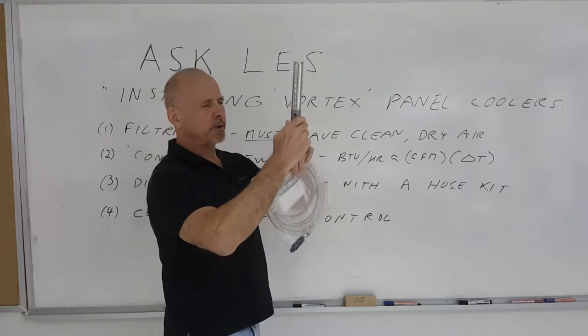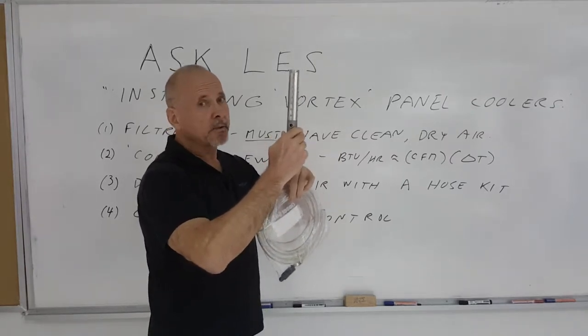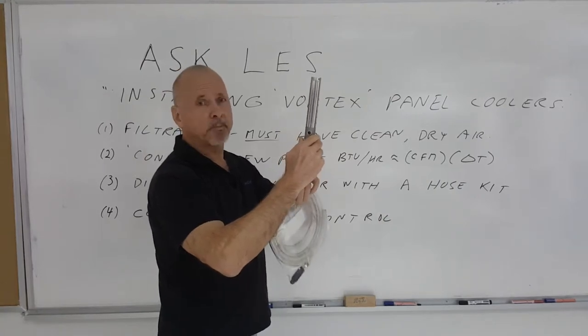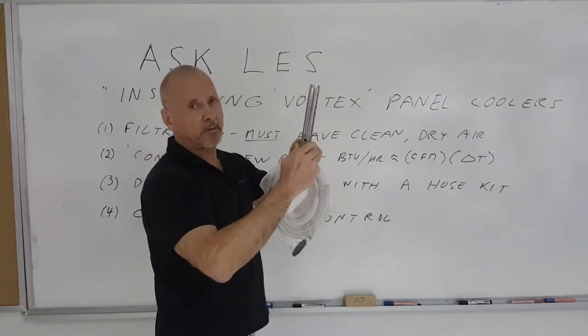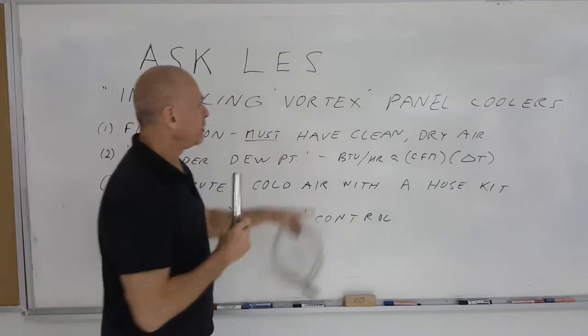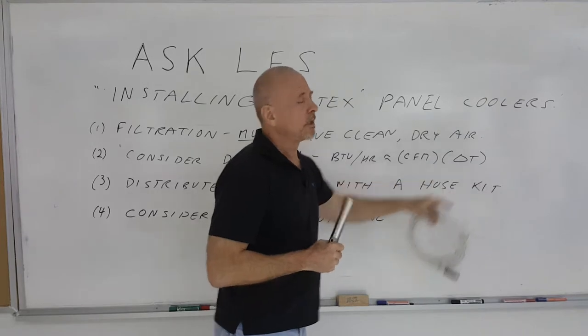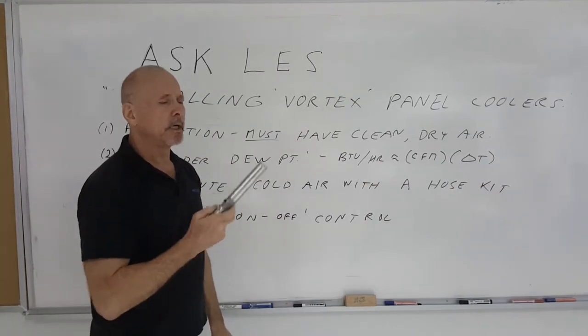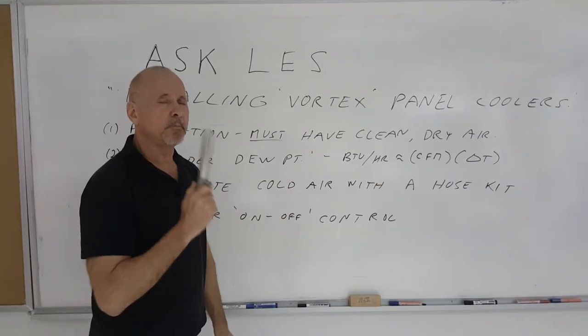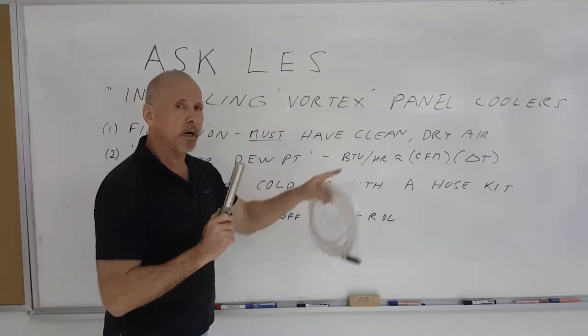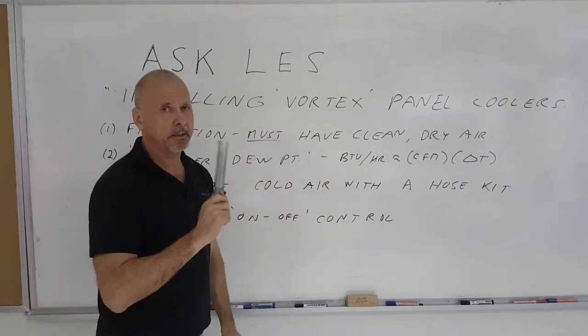If the temperature coming out is maybe only zero degrees, your flow rate might be about 60% or 70% of the compressed air going in. Your BTU is dependent both on the flow rate and the Delta T, so lower temperature doesn't necessarily mean better cooling. It depends also on the flow of the air going into the system.